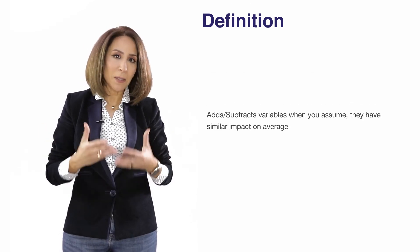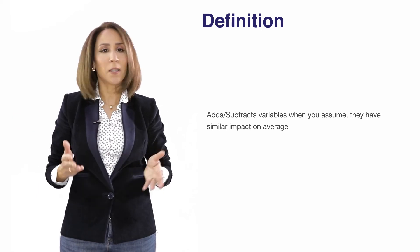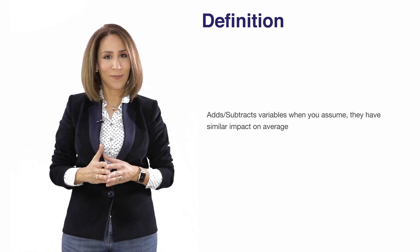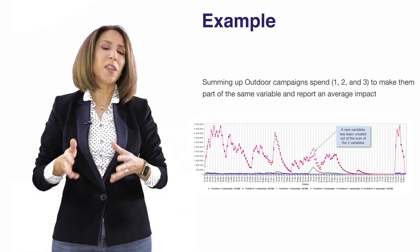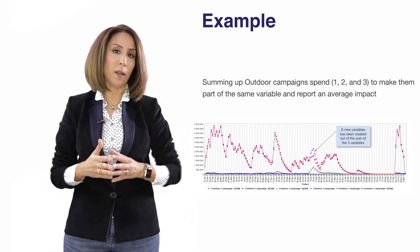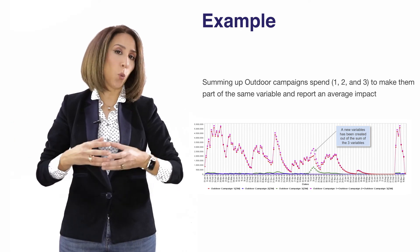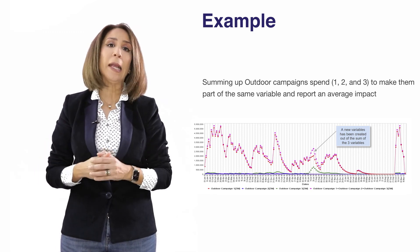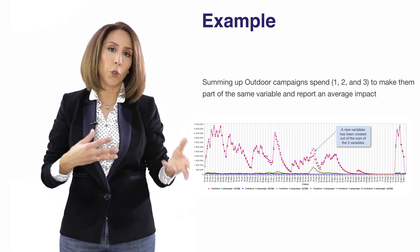The Adder processor is a simple case of the weighted sum where all weights are equal to one — it simply adds different variables together assuming equal weights. For example, if we have three outdoor campaigns with equal impact on sales, we add them all into one main variable, and the resulting coefficient tells us the average impact of outdoor on sales.